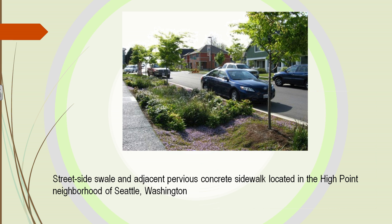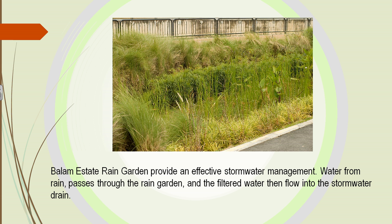Cities can now have swales along the sides of their streets. Here's one in Seattle — it has plants, and is depressed in the center so that as it rains, water fills the area and slowly percolates out. The plants then help remove the contaminants. It's called a rain garden. Rain gardens provide effective stormwater management — water passes into the area, is held by the plants and earth, and then filtered water gradually flows into a stormwater drain.